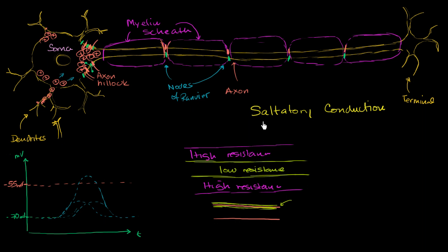Saltatory conduction comes from the Latin word 'saltare,' meaning to jump around or to hop around, because it looks like the signal is hopping. But that's not exactly what's happening — the signal is triggered at the axon hillock, then travels passively through electrotonic spread, gets boosted at each node of Ranvier by triggering voltage-gated channels and action potentials, and then dissipates and gets boosted again, allowing the signal to travel the full length of the axon without fading.